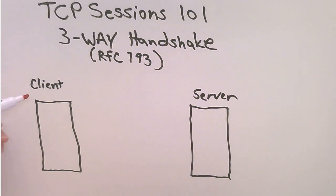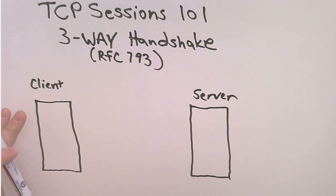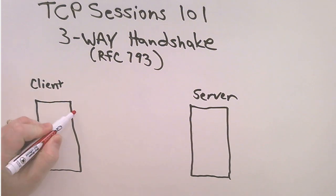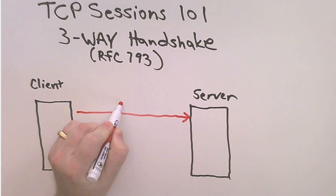Alright, so for our example, we have our client and we have our server. And for this demonstration, the client is going to create a TCP session to the server. So the first thing that happens is the client sends a packet called a SYN packet.